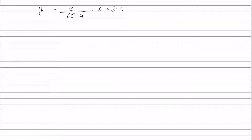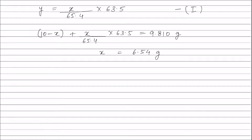According to the question, the weight of zinc left (10 minus x grams) plus the weight of copper formed (x divided by 65.4 multiplied by 63.5) equals 9.810 grams. Solving this equation, the value of x equals 6.54 grams. Putting the value of x into the equation, we get y equals 6.35 grams. Therefore, the weight of copper formed in the reaction is 6.35 grams.